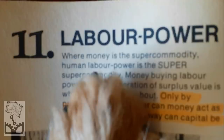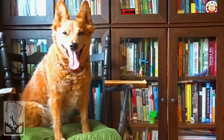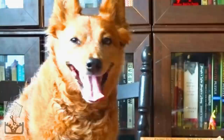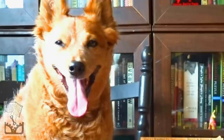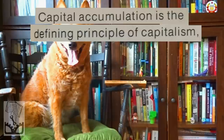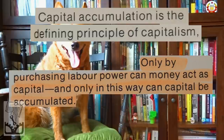Chapter 11: Labor Power. Labor power is what adds value and allows someone to sell something for more than what they bought it for — from M to M-prime. As Smith and Evans explain: 'Money buying labor power for the generation of surplus value is what capitalism is all about. Only by purchasing labor power can money act as capital, and only in this way can capital be accumulated.' Capital accumulation is the defining principle of capitalism — if you know that, you get it. That's the whole enchilada.